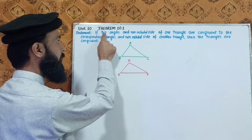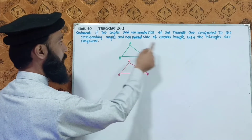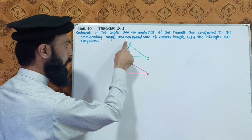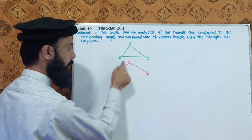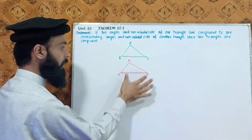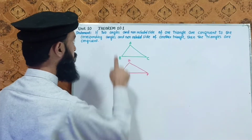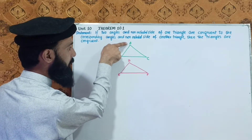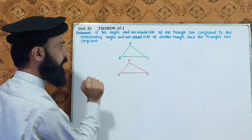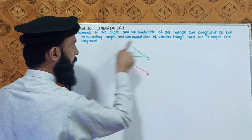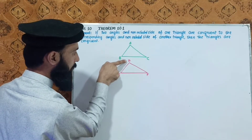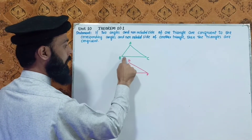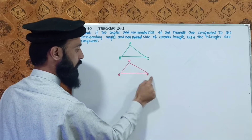The diagram shows two triangles: triangle ABC and triangle DEF. Let's suppose triangle ABC has angles A and B congruent to the corresponding angles D and E of triangle DEF. The non-included side means BC is congruent to EF.